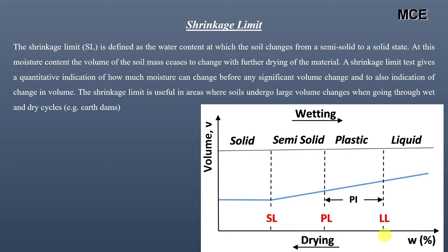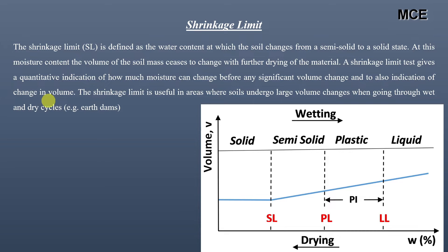The shrinkage limit test gives us an indication of how much moisture can change before any significant volume change, and also an indication of change in volume. This shrinkage limit is useful in areas where soil mass undergoes large volume changes when going through wet and dry cycles, such as earth ramps.